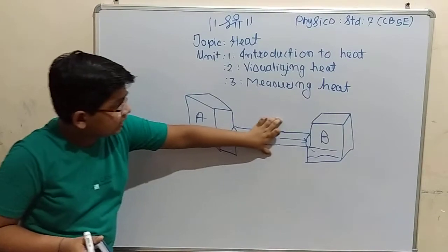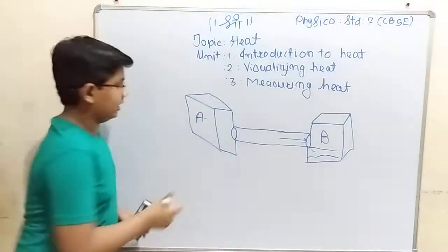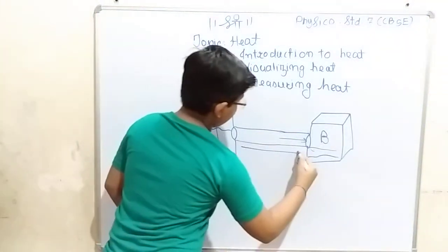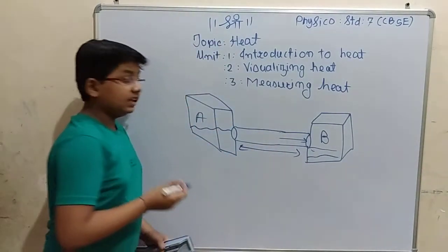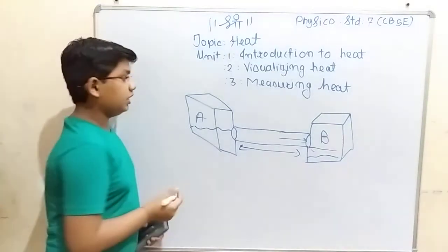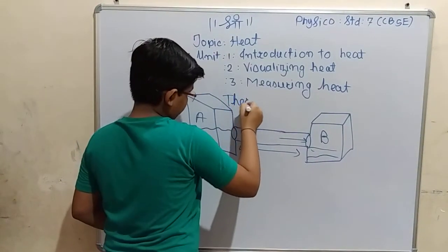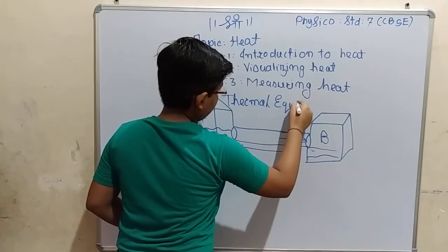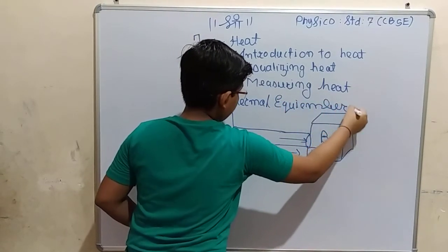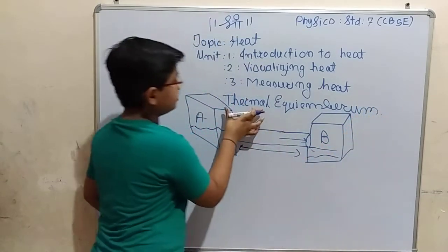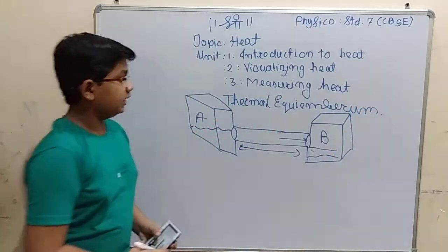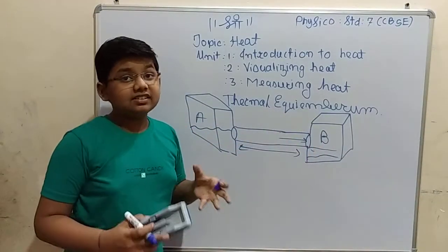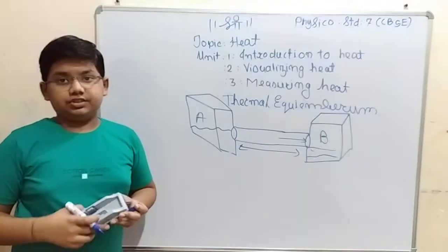But if I make it such that the heat is distributed equally — equal amount of heat in box A and equal amount in box B — and the pipe is straight at the same level, then this condition is called thermal equilibrium. Both areas contain the same amount of heat.